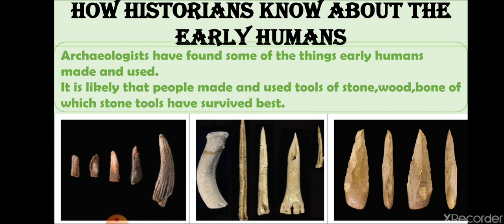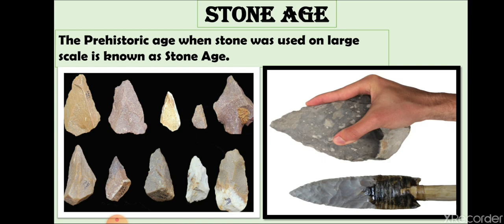Historians and archaeologists found many tools and weapons made of stone, wood, and bone. Early humans found that stone tools are very durable — they can last long. That is why they mainly made tools of stone. That is why this era, the prehistoric period, is also known as the Stone Age.